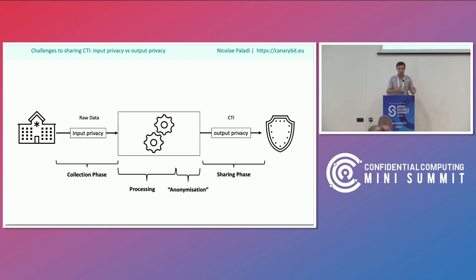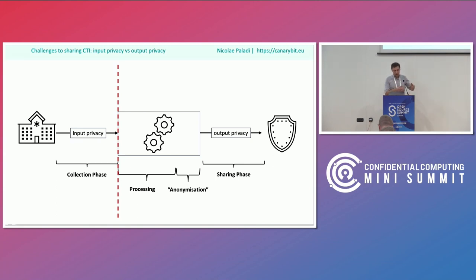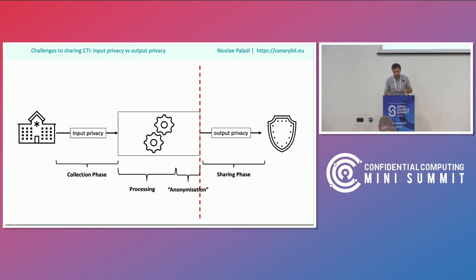The data is somehow processed and pseudo-anonymized, and then there's the sharing phase — output privacy: what kind of views or queries do you allow based on the processed information? This really depends on where the organizational boundary lies. Is all the processing and pseudo-anonymization happening on the side of the managed security service or on the side of the data owner? The organizational boundary can shift, and depending on the setup, you have very different trust relationships.